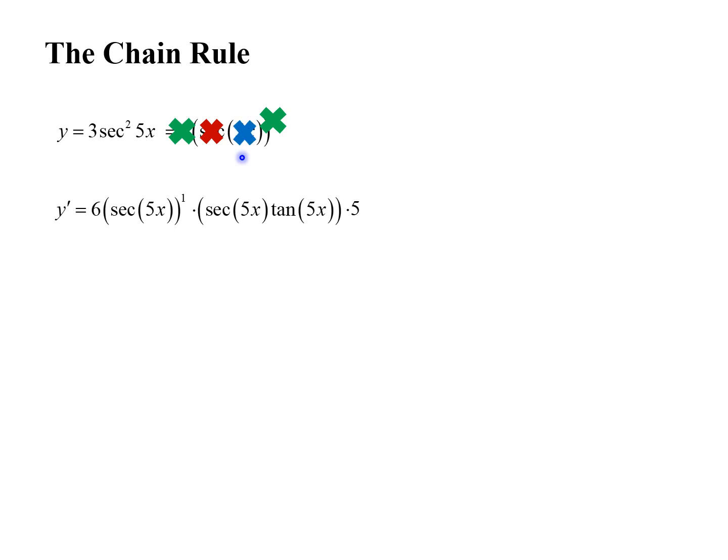We put the coefficients in the front — so we have 30. Then we see secant 5x times another secant 5x, so we put a square on that. Our final answer is 30 secant squared 5x tangent 5x. I hope this helps you. Have a good day.